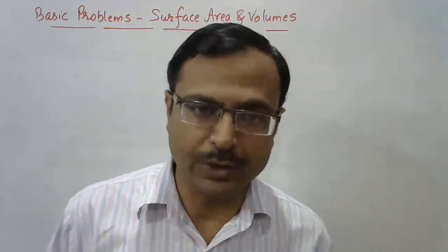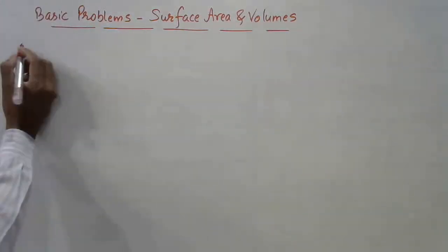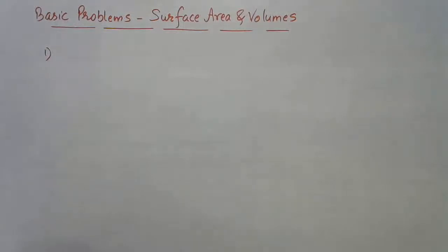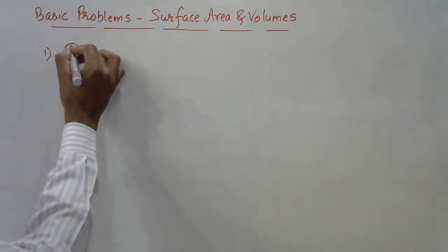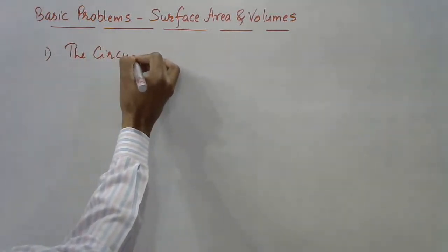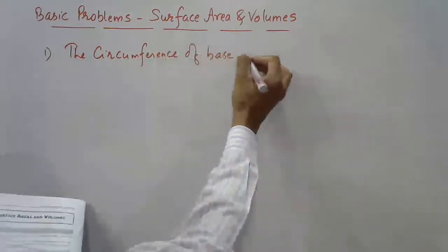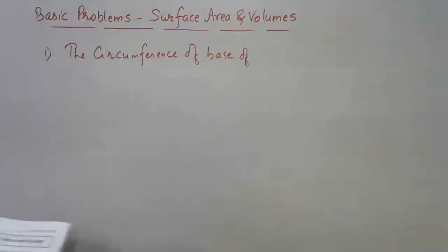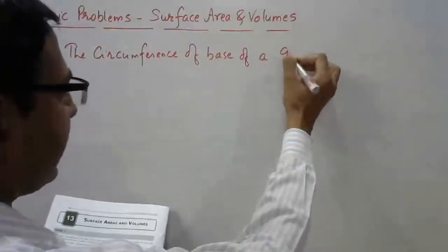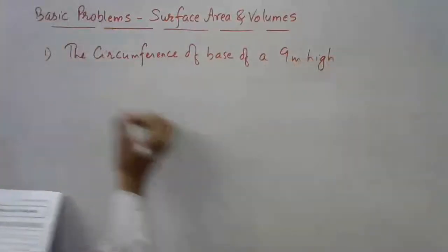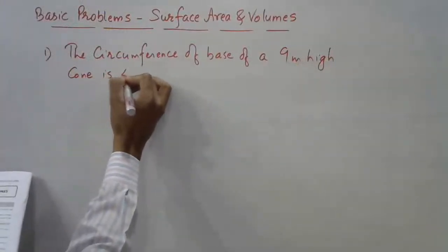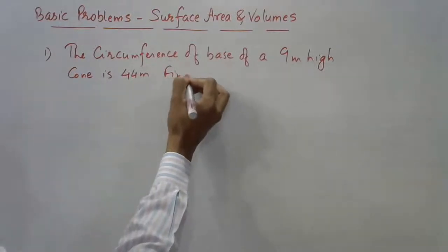So the first question I'm going to take up: these are all basic problems of surface area and volume. The question is — the circumference of the base of a 9-metre high cone is 44 metres. Find the volume.